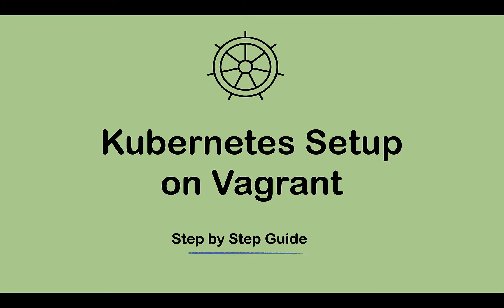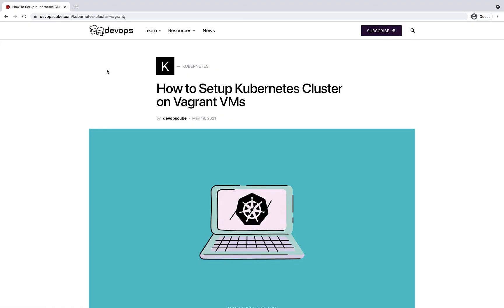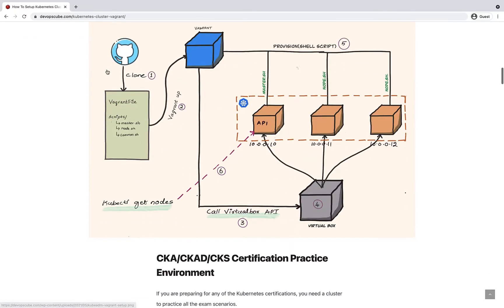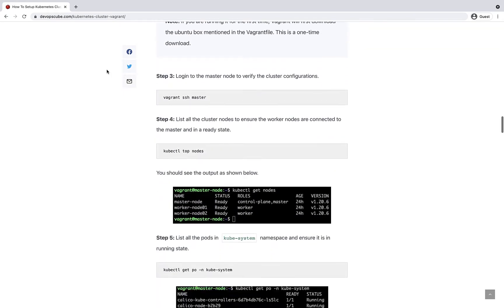Hello guys, welcome to another practical DevOps tutorial. In this tutorial I'll be showing you how to set up an automated Kubernetes cluster on Vagrant using the kubeadm utility. I have the entire tutorial as a blog on devopskube.com — please check the description where I have given all the links to the required documentation and scripts.